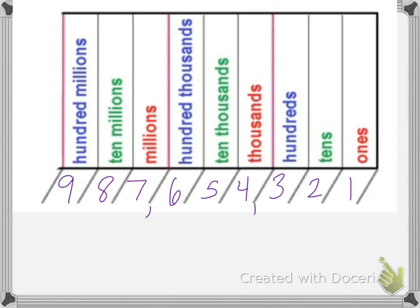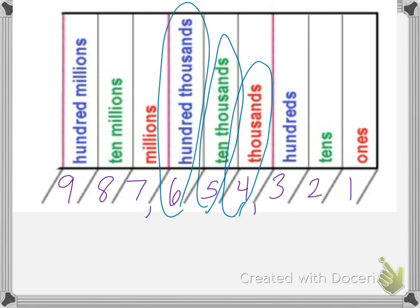We can make a chart like this for large numbers that looks like this. If you look, you can see that the four is in the thousandths place. The five is in the ten thousandths place. And the six is in the hundred thousandths place.